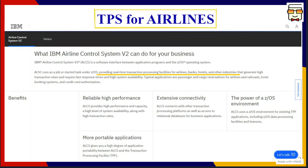Coming to real world examples of transaction processing systems — there is a slight difference between what an example is and what an application is. When we apply the concept of TPS to different domains such as banks, airlines, or malls, those are application areas. But when we say real world examples, we actually name the TPS being implemented in a particular domain.